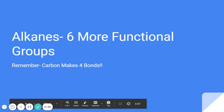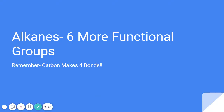We're learning six more functional groups. You've already learned how to name alkane functional groups like methyl, ethyl, propyl, and hydrocarbons like chloro, fluoro, bromo. These new functional groups are different — for the most part, they all include oxygen.